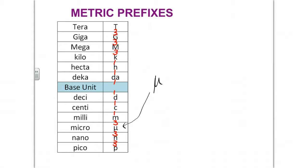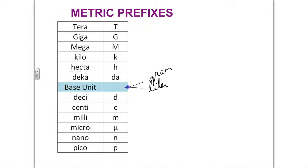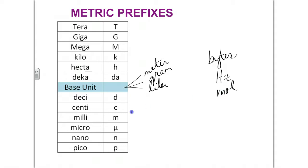A base unit could be one of the following: gram, liter, or meter. Technically, anything could be a base unit. Other base units might be something like bytes — such as megabytes, gigabytes, terabytes — or hertz, so megahertz, gigahertz. Mole could be a base unit, and there is such a thing as a millimole. Any unit could be a base unit, and prefixes are placed in front of those units to give them scale.